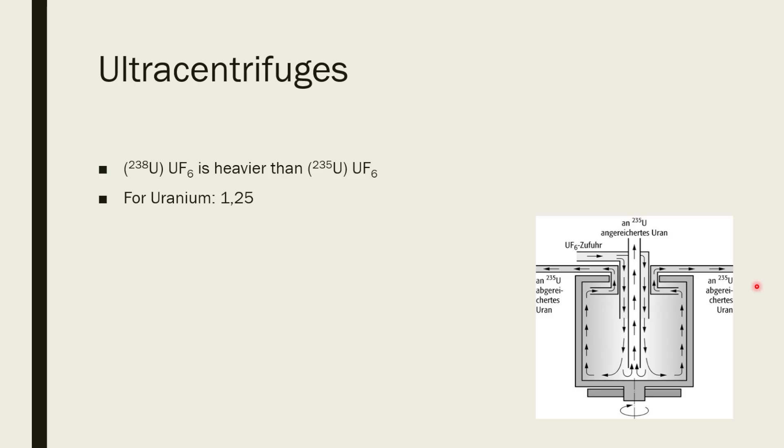The separation factor is about 1.25. So not quite high. It's about 25% in that case. So if you put in naturally 0.7% uranium-235 in one centrifuge, you will have this gas having a uranium-235 content of 0.875%. So not that much and go on and so on.